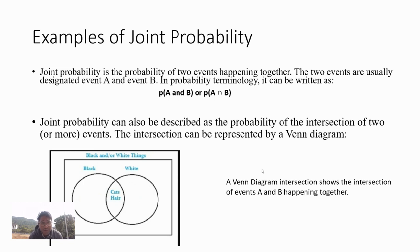Hello, my name is Vivint Joseph, and we are going to talk about examples of joint probability. First, we will discuss what joint probability is. Joint probability is the probability of two events happening together. The two events are usually designated event A and event B. In probability terminology, it can be written as P(A and B) or P(A ∩ B).